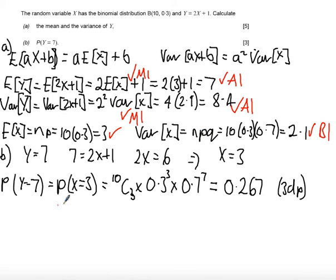Next, in Part B, there's a method mark for identifying that the probability that Y equals 7 is equal to the probability that X equals 3. There is then an answer mark for correctly substituting the values into the binomial formula, and an answer mark for the numerical answer at the end.